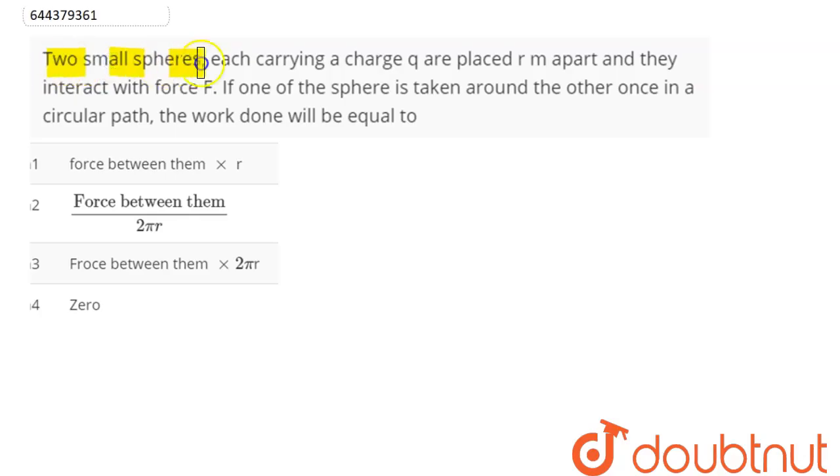Question is: two small spheres, each carrying a charge Q are placed R meters apart and they interact with force F. If one of the spheres is taken around the other once in a circular path, the work done will be equal to.